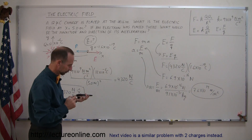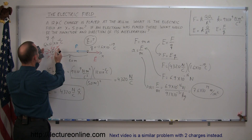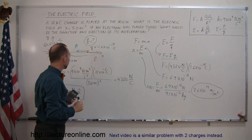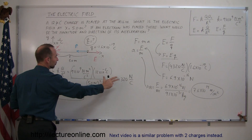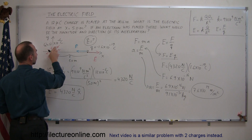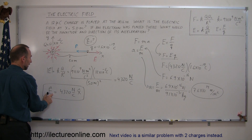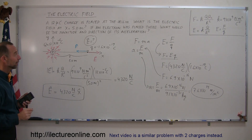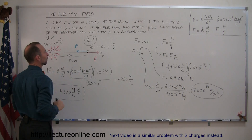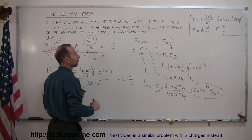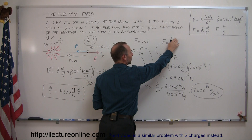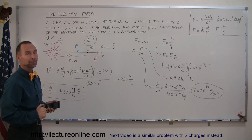To recap: given a charge at the origin, to find the electric field use E equals kQ over r squared, derived from Coulomb's law. Plug in the numbers to get the magnitude, then recognize that the field points outward from a positive charge — so E equals 4,320 N/C in the positive x direction. Since the electron placed there is negatively charged, it feels a force to the left toward the positive charge. Using Newton's second law and the definition of electric field E equals F over q, you can find the force and then the acceleration.